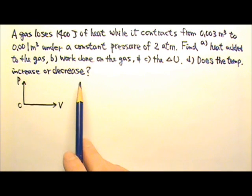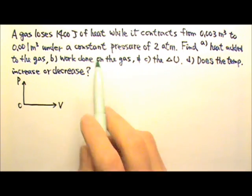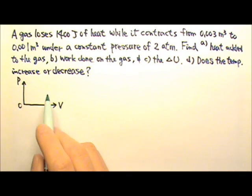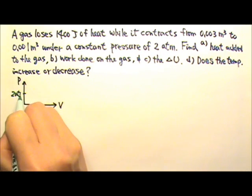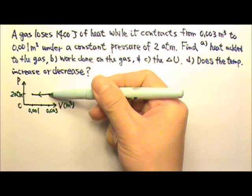Although this problem does not ask us to plot a PV diagram for the process, it can often be helpful to see what the PV diagram is like when we solve a problem. So I will start with the diagram. The pressure is kept at a constant, so it's going to be a horizontal line. The pressure is kept at the 2 atmospheres. And the volume goes from 0.003 to 0.001. So the process goes that way.